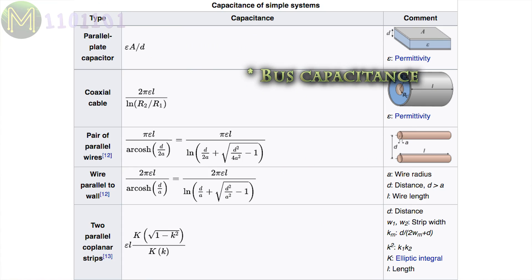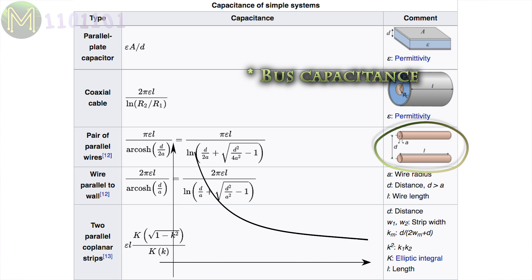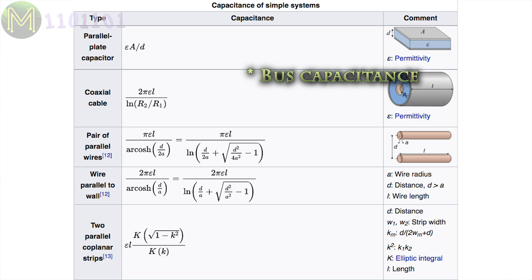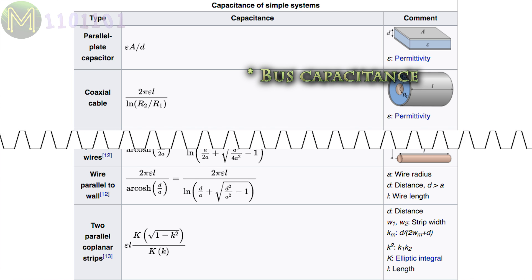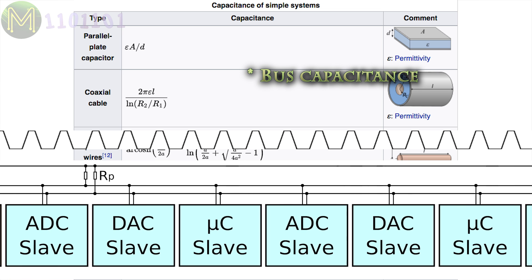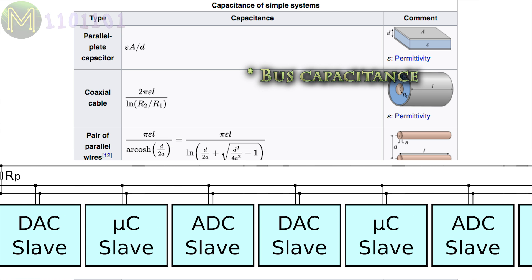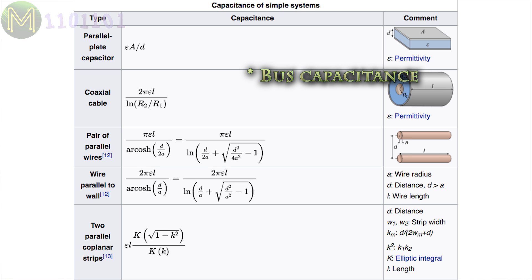The lower the operating voltage, the greater the effect of capacitance caused by wires and tracks, resulting in signals rising and falling more slowly, and also crosstalk across wires. So you either have to lower the clock rate, or shorten your wires when using lower voltages. This limits the practical length of an I2C bus. However, in practice, this is much shorter.